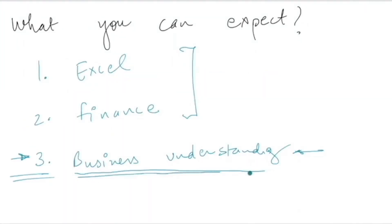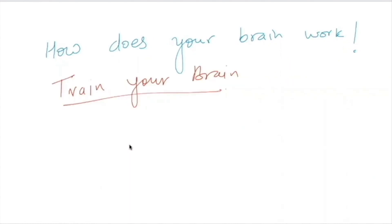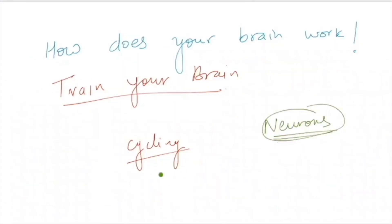Your objective is to train your brain. Do you remember the first time you did cycling? You were very conscious. But today when you do cycling, you can talk on the phone or talk to your friends. What happened in the brain? In your brain there are neurons which are responsible for learning. If you want to learn new things, you need new neurons.